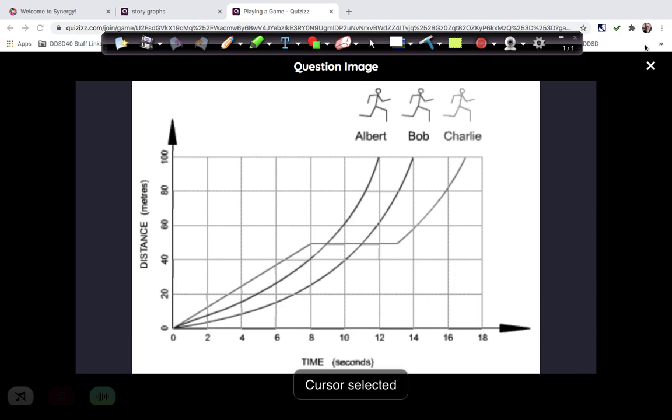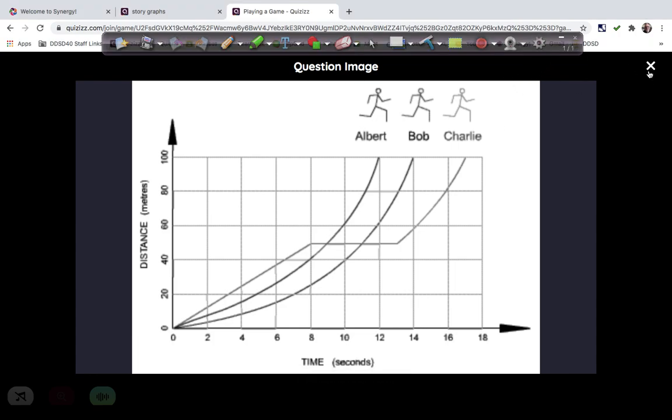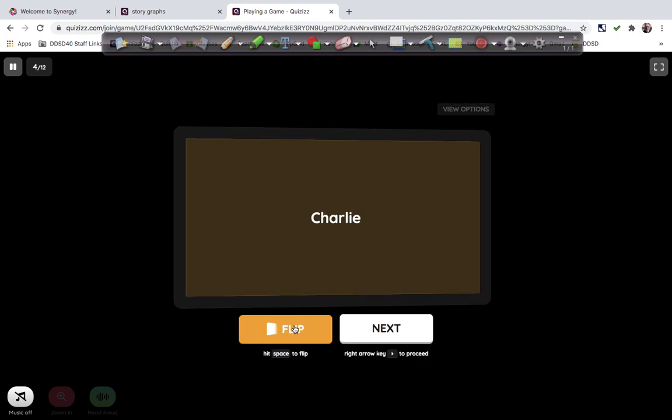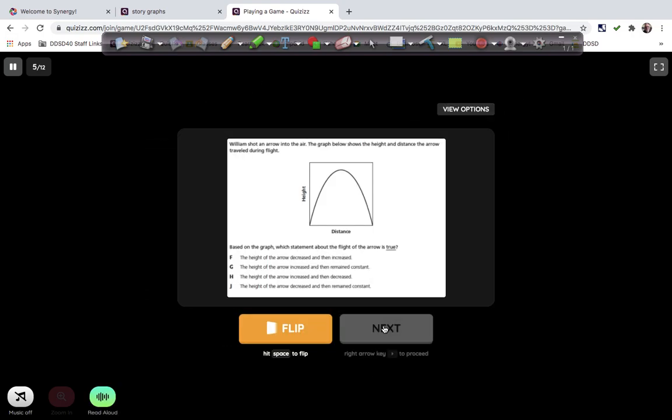All right, let's look at the next one. So let's see, which runner stopped for a rest? And we think it was Charlie. And it was Charlie. All right, next problem.